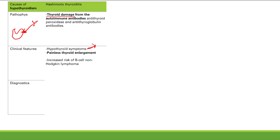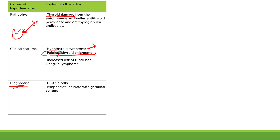The other key differentiating feature is a painless thyroid enlargement — the inflammation causes enlargement of the thyroid, and for Hashimoto's thyroiditis it's painless. This disease also carries an increased risk of B-cell non-Hodgkin lymphoma. For diagnostics, you will see Hurthle cells on Hashimoto's thyroiditis.